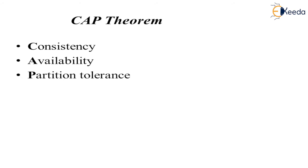Then there is the CAP theorem. It consists of three main attributes: consistency, availability, and partition tolerance. Consistency guarantees all storage and replicated nodes have the same data at the same time. Availability means every request is guaranteed to receive a success or failure response. Partition tolerance guarantees that the system continues to operate in spite of arbitrary partitioning due to network failures.